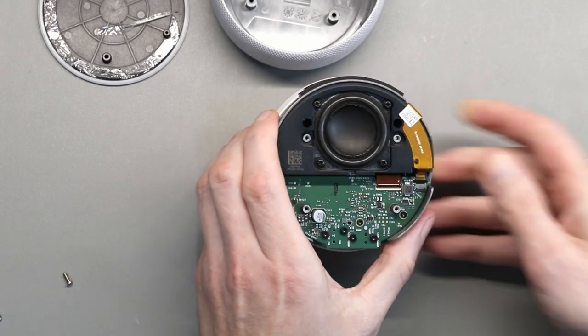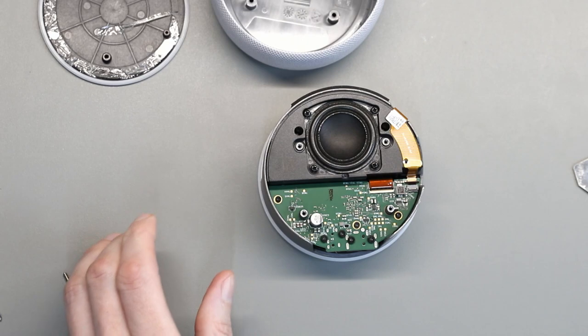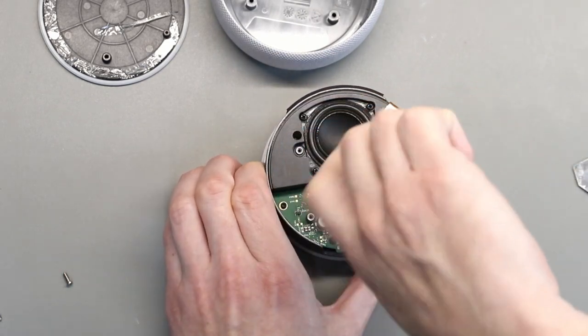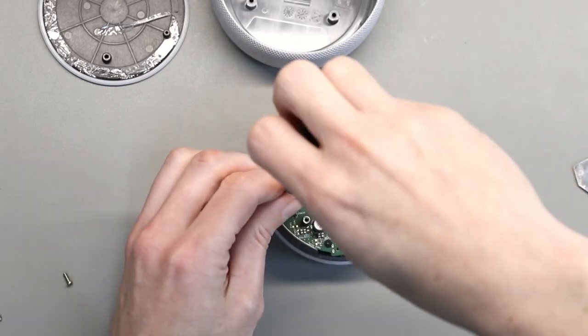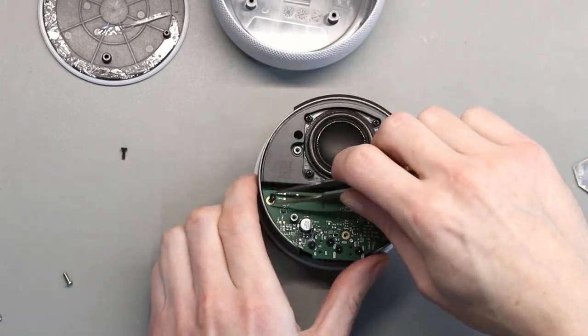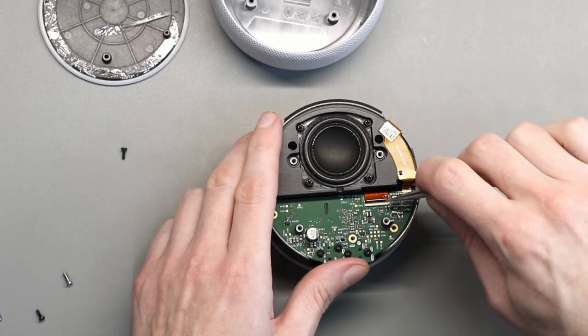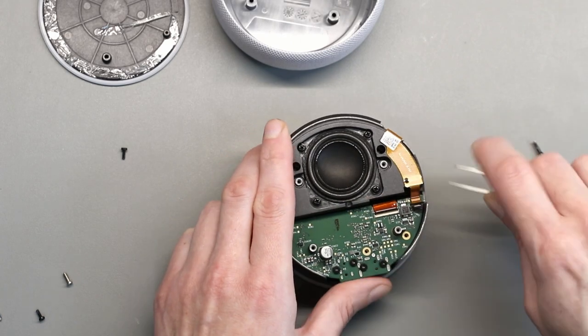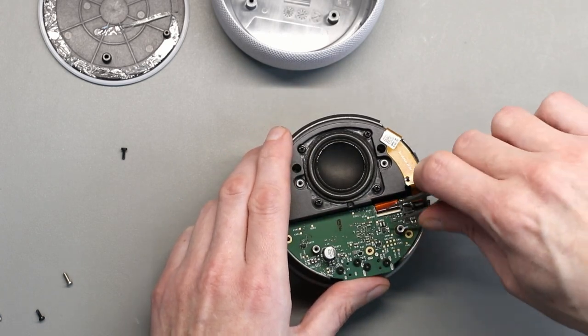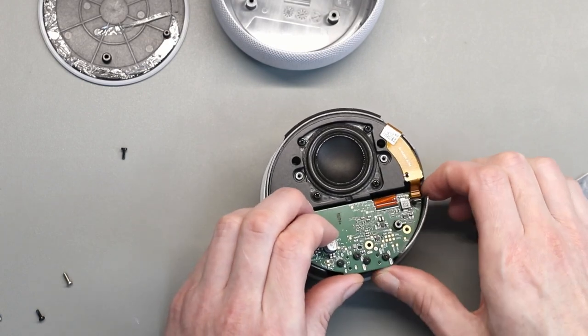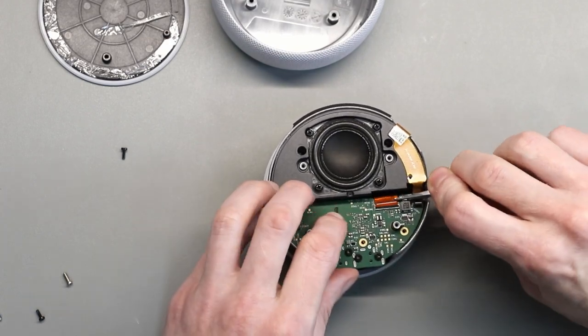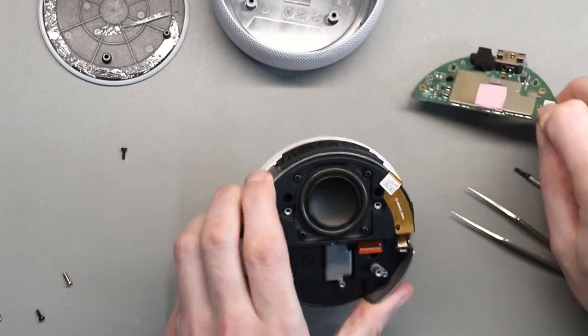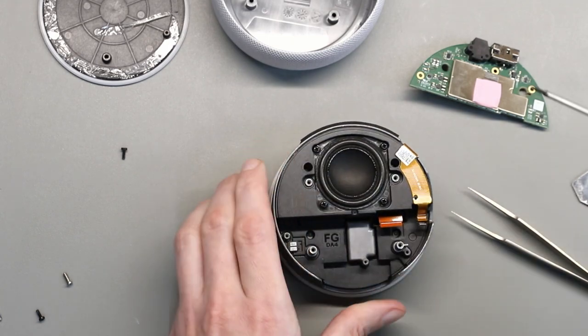So the next thing to do is to take off the PCB. And there's two small cables here which just need to be released. OK, so that's the blackboard removed. So now take the other screws out to access the other side.